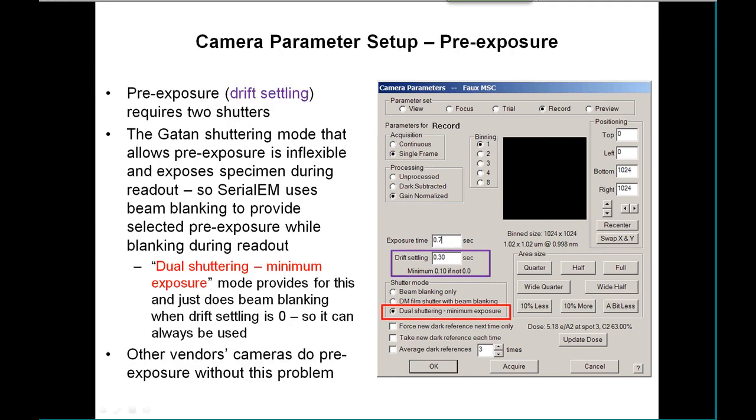Pre-exposure, referred to as drift settling, is very important for doing any kind of plastic section tomography. What happens is that when the beam first hits the specimen, it will charge up a bit and drift for a couple of tenths of a second.